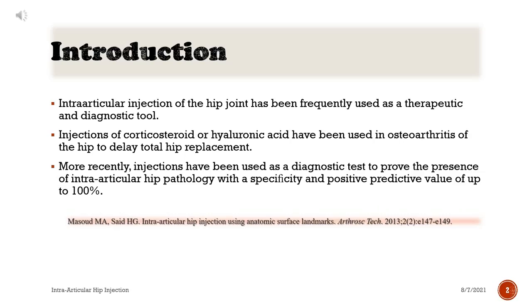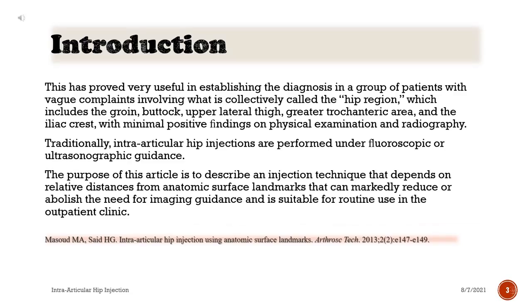Introduction: Intra-articular injection of the hip joint has been frequently used as a therapeutic and diagnostic tool. Injections of corticosteroid or hyaluronic acid have been used in osteoarthritis of the hip to delay total hip replacement. More recently, injections have been used as a diagnostic test to prove the presence of intra-articular hip pathology, with a specificity and positive predictive value of up to 100%.